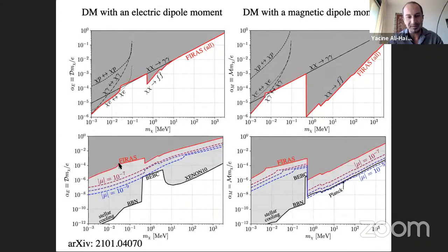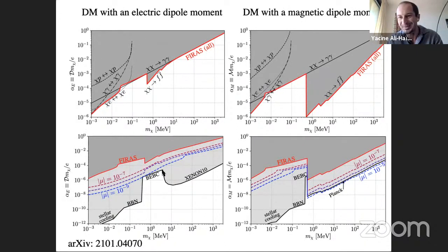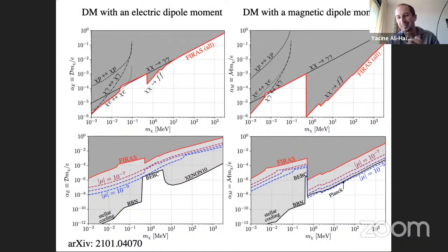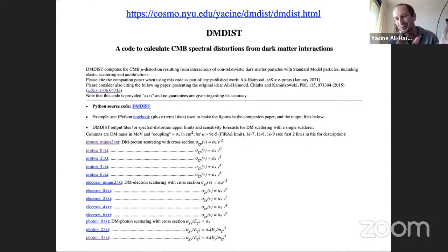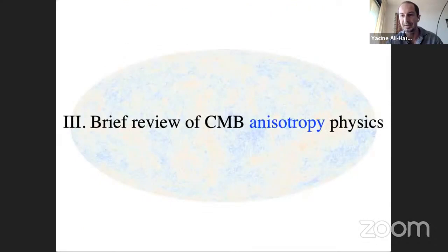For example, for an electric dipole moment dark matter model, the spectral distortion limits on the dipole moment as a function of mass are actually weaker than existing constraints from direct detection, nucleosynthesis, or stellar cooling in every mass range — even for futuristic experiments. So for this specific example, spectral distortions don't beat existing constraints, but this remains one useful tool for constraining dark matter interactions. A code is available for those interested.